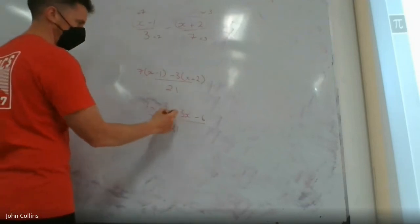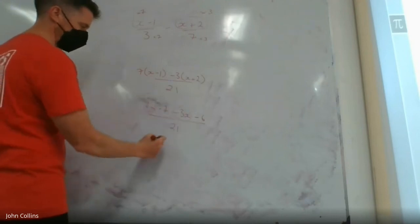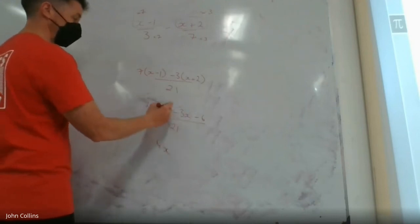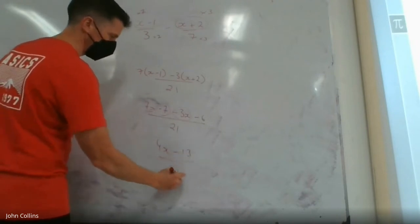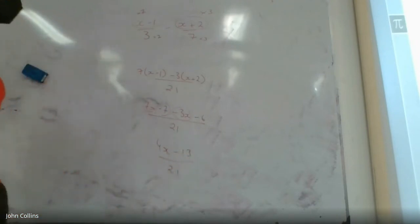Like term, like term. 7 of them, take away 3 of them, I'm going to have 4. Negative 7, take away another 6, I'm going to have negative 13 over 21. That is the answer to the second one.